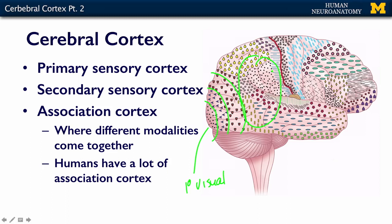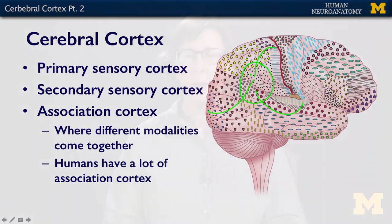What happens out in the association cortex is that information from the visual system, information from hearing, and information from somatosensory cortex all comes together in the association cortex. This is where, if it walks like a duck and it talks like a duck, it's probably a duck — that's where you put it all together.